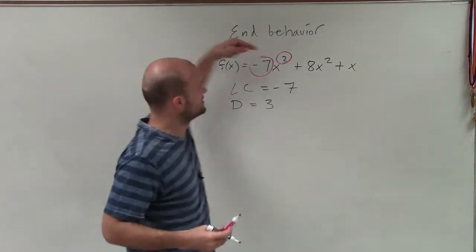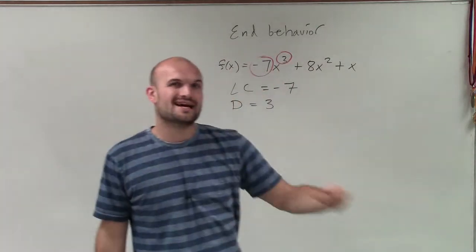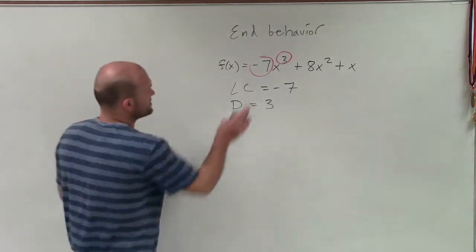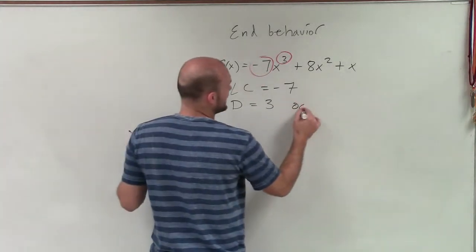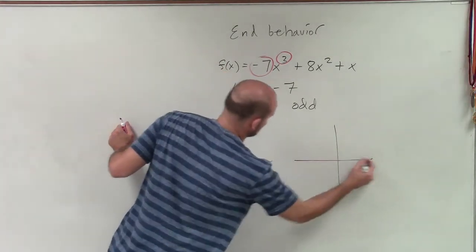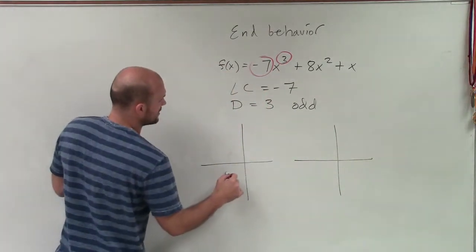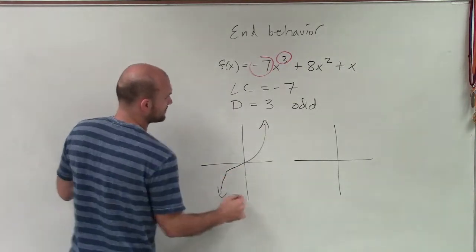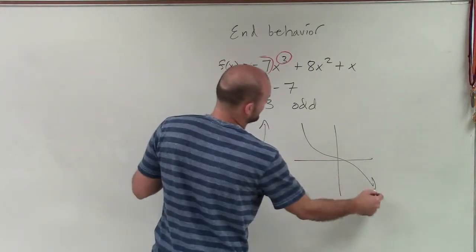Make sure we know that the degree, because it's in descending order, and 3 is our largest exponent of our polynomial. Well, since our degree is odd, we know that we're only going to have two different options for our end behavior. It's either going to go rise right and fall left, or it's going to rise left and fall right.